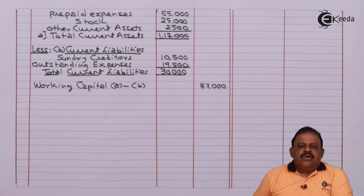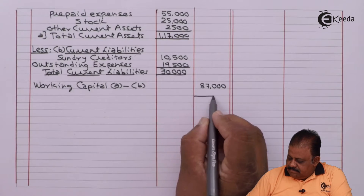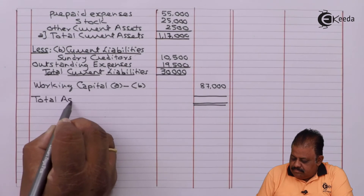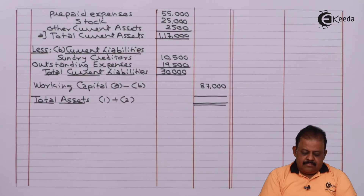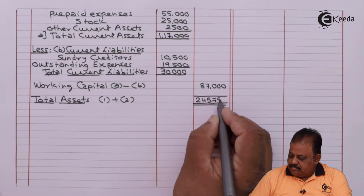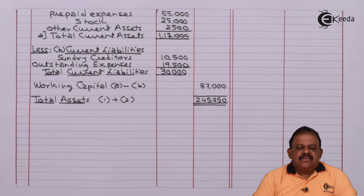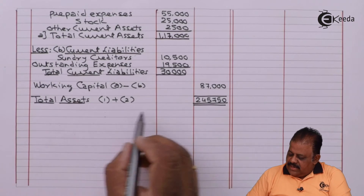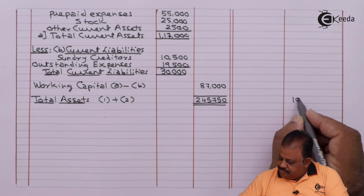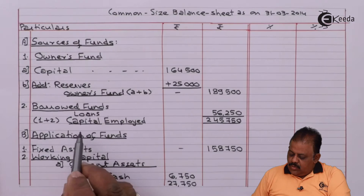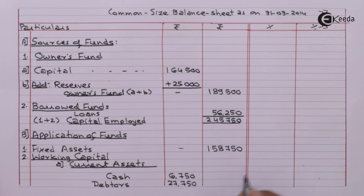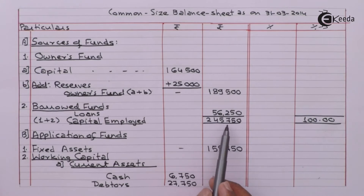We can add fixed assets and working capital to arrive at total assets. We have completed the vertical balance sheet. Let us now prepare the common size balance sheet. For that purpose we are required to take total capital employed as well as total assets equal to 100. Total assets and total capital employed are both 2,45,750, taken as 100. Each value in the balance sheet will be converted to make it common size, using the base of 2,45,750.